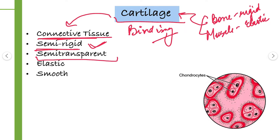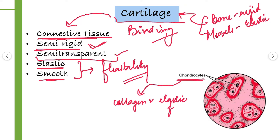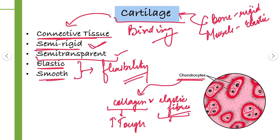Cartilage is semi-transparent in appearance. They are elastic and smooth, which provides flexibility to the joints. Inside cartilage, some specialized cells are present which are called chondrocytes. Chondrocytes are embedded within a large amount of extracellular matrix with collagen and elastic fibers. If collagen fibers are more, the cartilage is more tough. If elastic fibers are more, then they are more elastic.